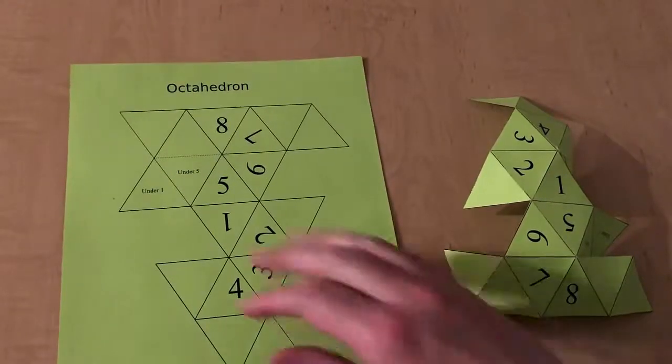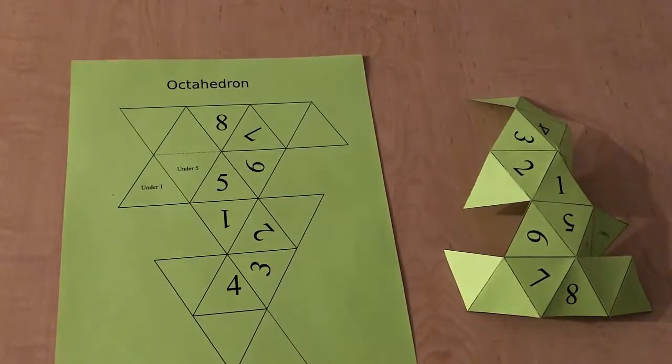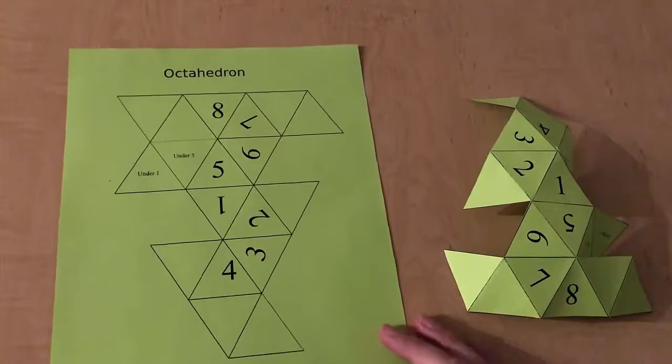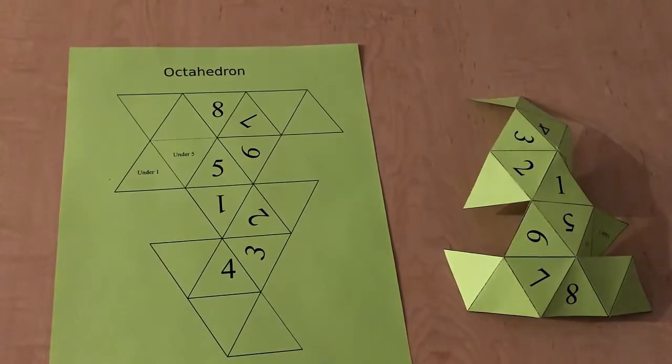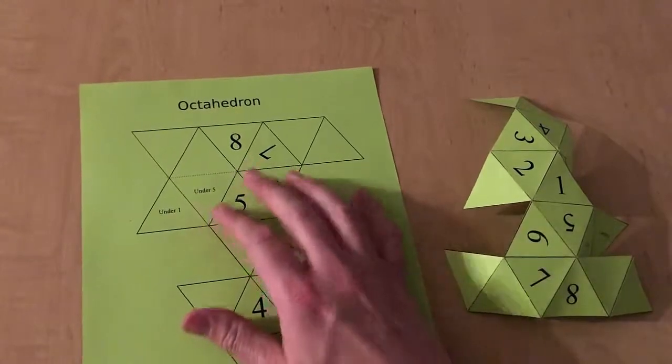When we assemble this model, the sides that are the faces numbered one through eight will be the faces that show. The extra triangles or tabs that I've made allow us to assemble this thing without any tape or glue.